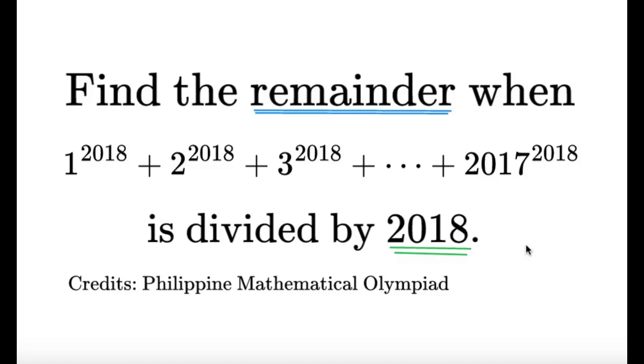Hello, hello, it's Dumplet here. Here's an item on number theory. Find the remainder when 1 raised to 2018 plus 2 raised to 2018 plus 3 raised to 2018 plus so on and so forth until plus 2017 raised to 2018 is divided by 2018. Credits to the Philippine Mathematical Olympiad for this item.